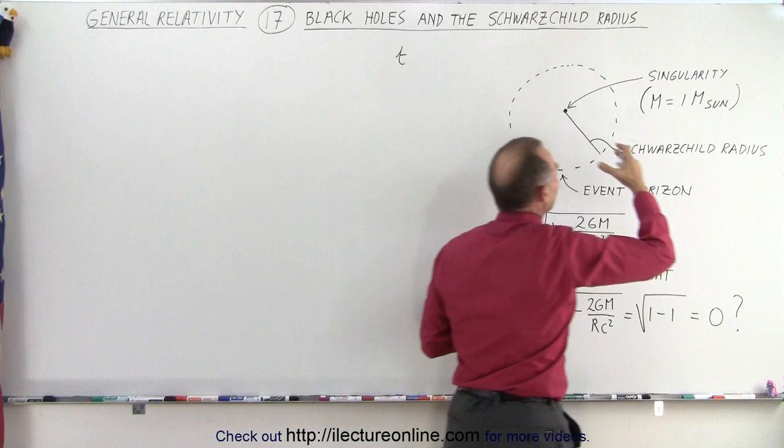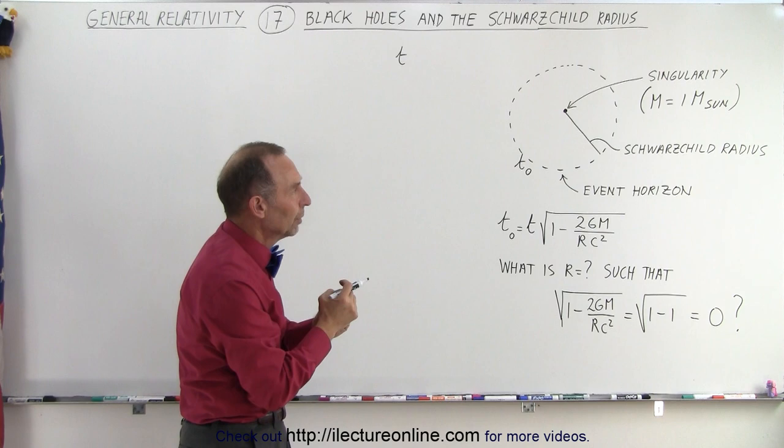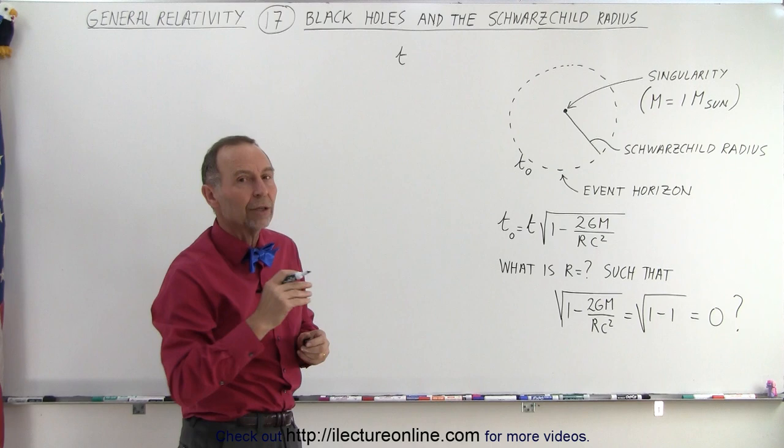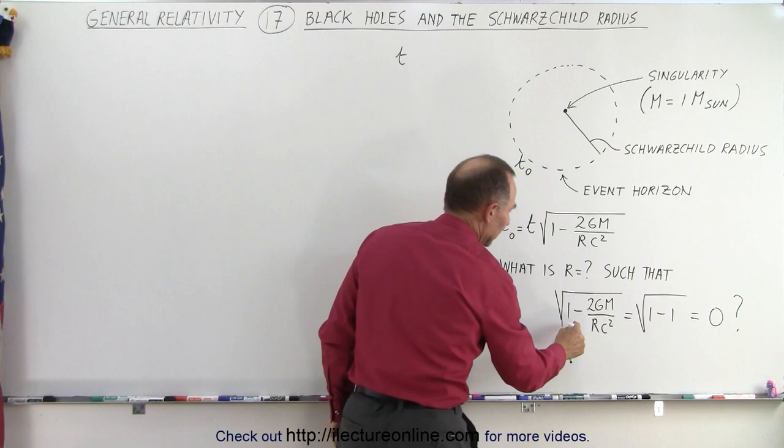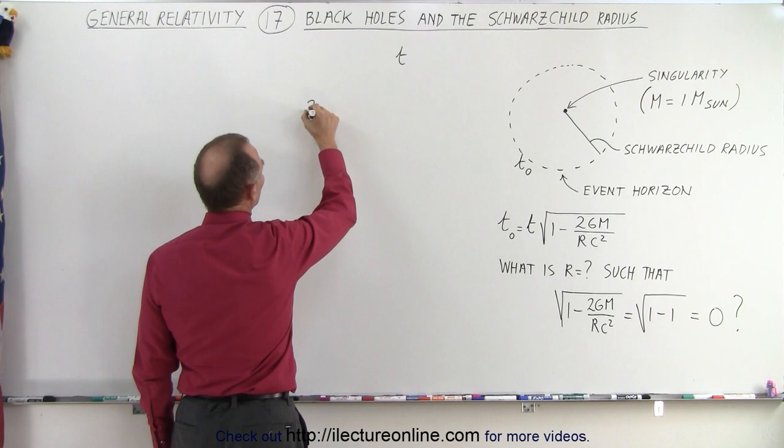if that object had a singularity, mass concentrated in an extremely small volume, and if that mass was equal to the mass of a single sun, what would be the Schwarzschild radius? What would be the radius of that event horizon? And so then they said that would occur when you have 1 minus 1 being equal to 0.